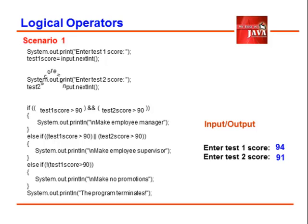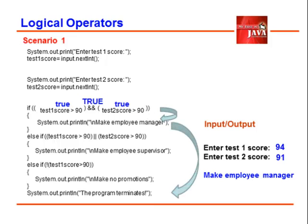We enter 91, 91 is stored on test two score. We validate is test one score greater than 90? True. We validate again test two score greater than 90? True. So we make the entire condition true. So we display make employee manager. After this it will proceed on the last line, the program terminates.